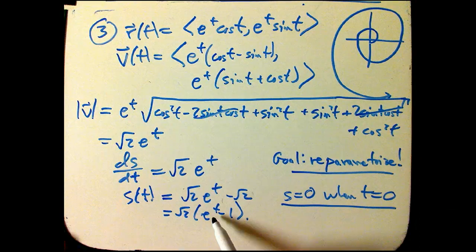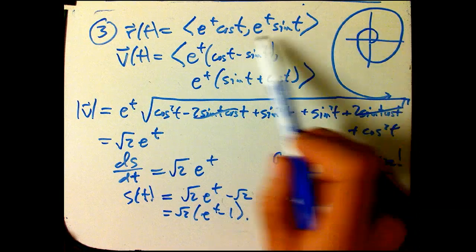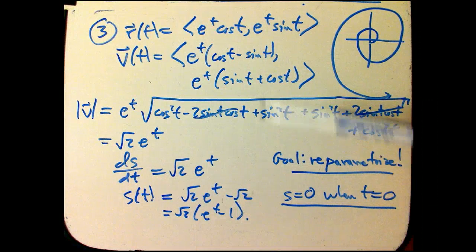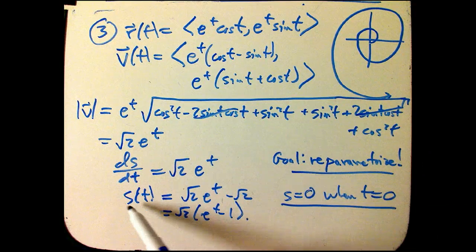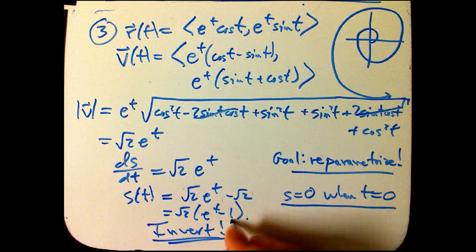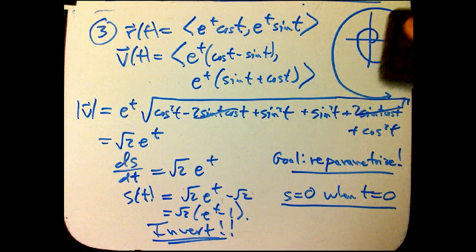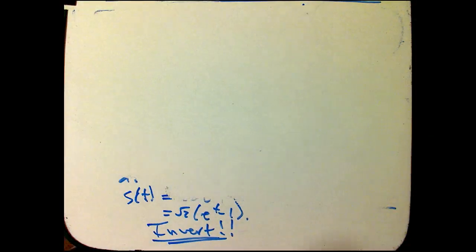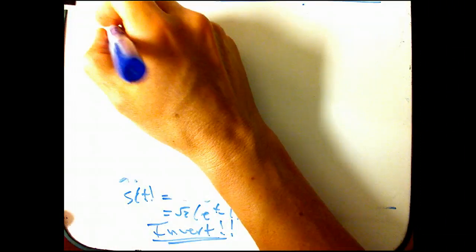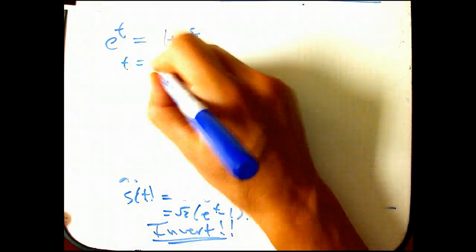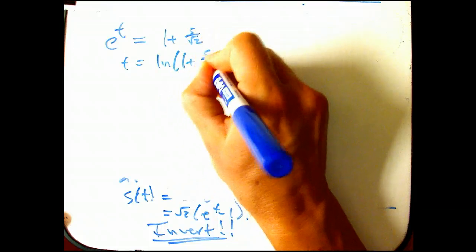We don't really want s as a function of t. If we can get t as a function of s, though, we can plug it into here, and we can get r as a function of arc length so far. So the steps are calculate the speed, integrate to get position as a function of time, and then invert. It's a great use of inverse function thinking. So if s is root two e to the t minus one, I'm going to save just that. I don't want to make this video too long, but we're getting close to the end. Then e to the t is one plus s over root two, and t is the ln of one plus s over root two.